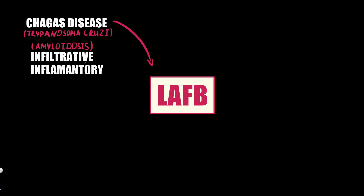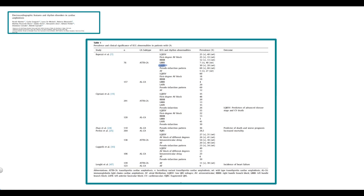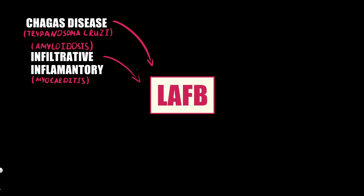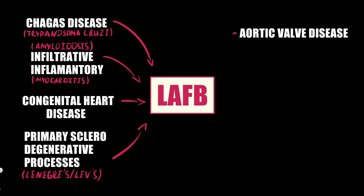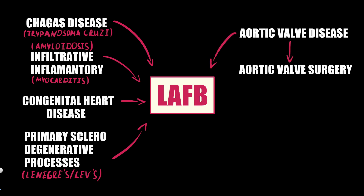The etiology of left anterior fascicular block includes Chagas disease, an infection caused by Trypanosoma cruzi. It can also be caused by infiltrative myocardial disease such as amyloidosis — different subtypes of amyloidosis present with left anterior fascicular block in 20 to 40% of cases. Inflammatory and congenital heart diseases are additional causes, as are Lenegre's and Lev's syndromes, which involve fibrosis and sometimes calcification of the proximal conduction system. The left anterior fascicle crosses the left ventricular outflow tract and can be damaged by high flow, high pressure, and turbulence, as occurs with aortic valvular disease and subsequent aortic valve surgery.